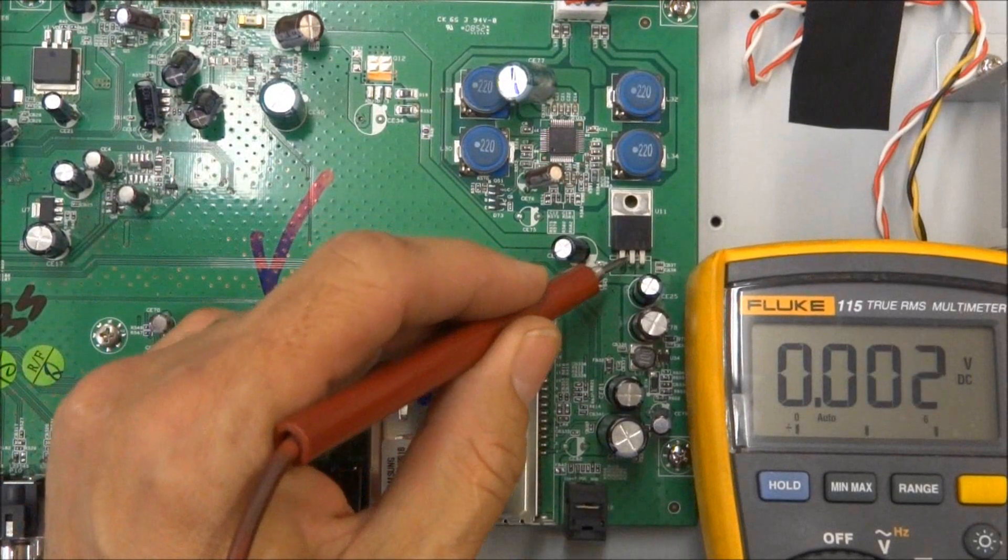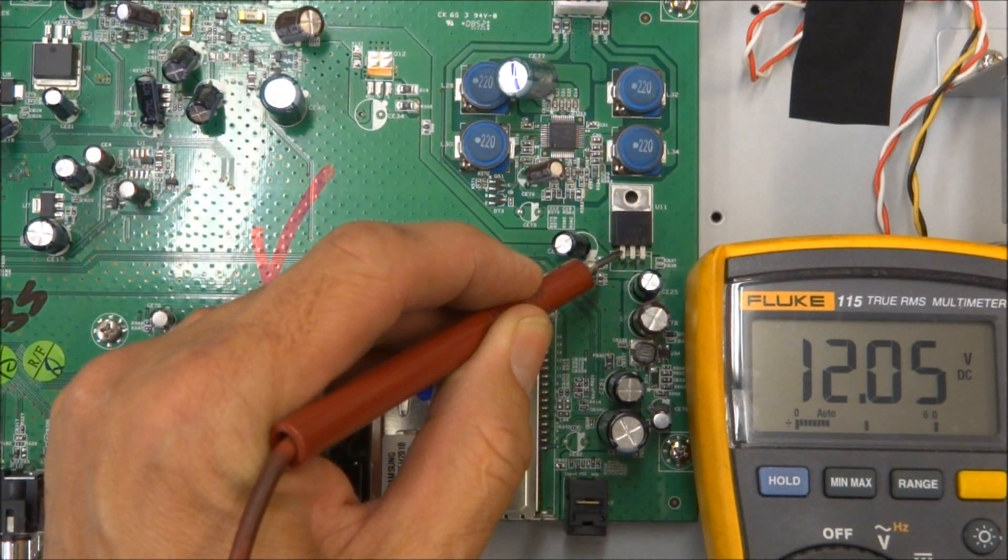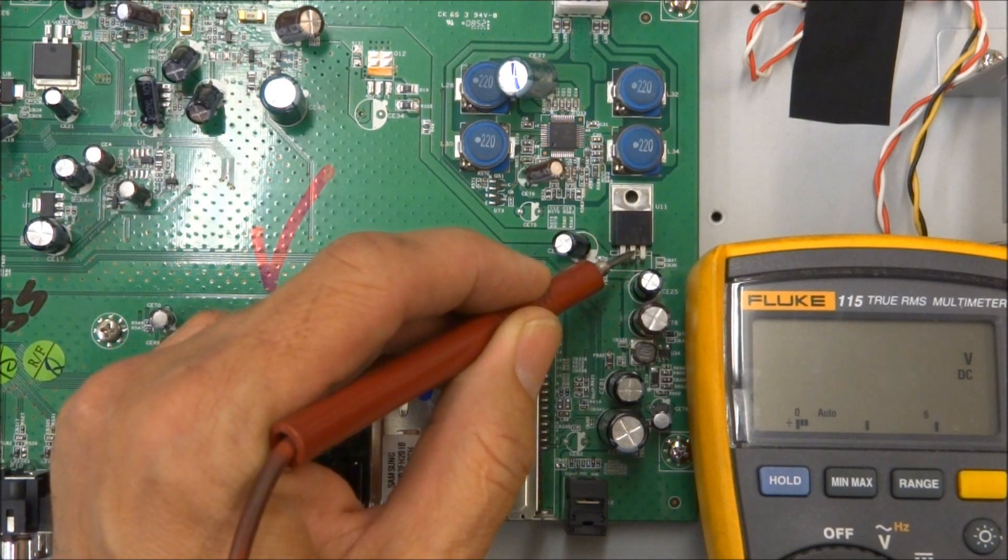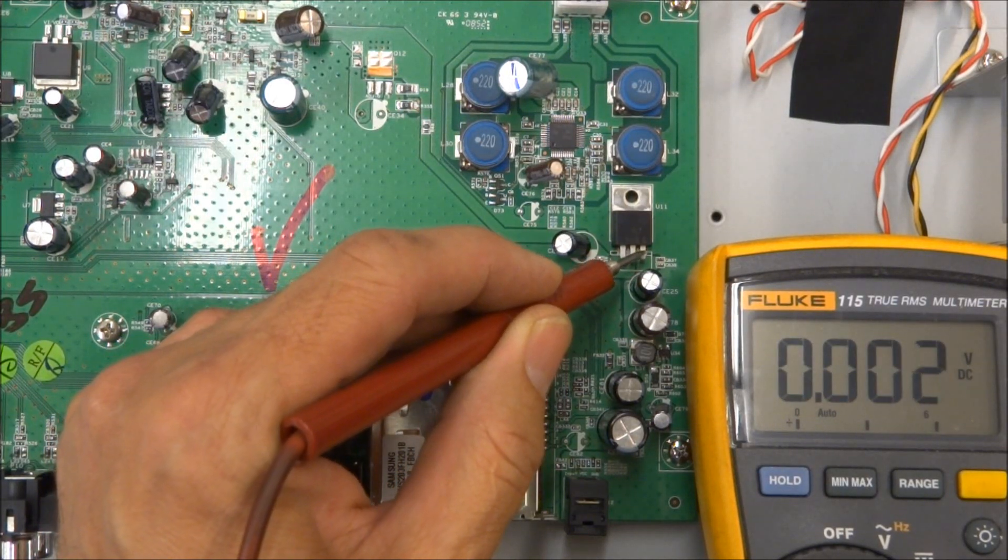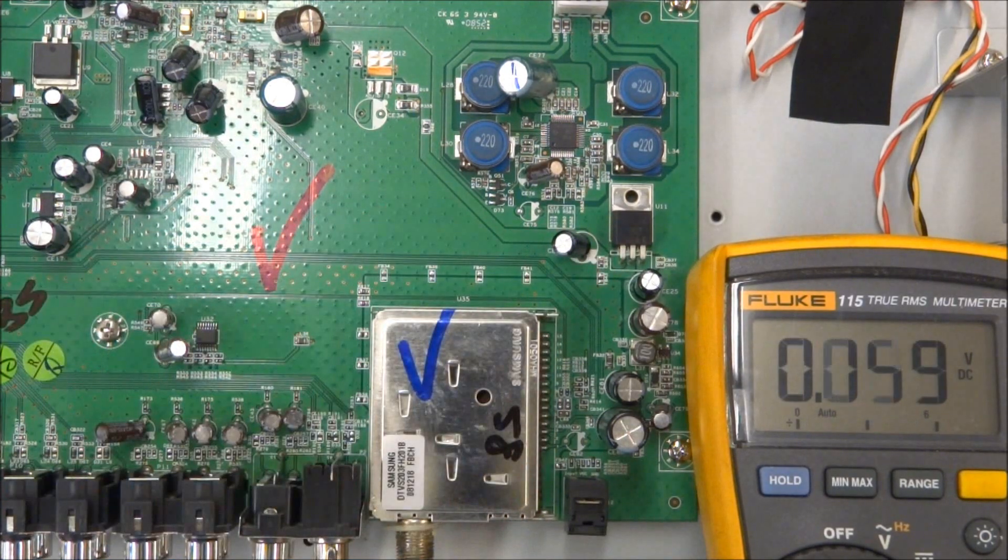The only other regulator we can look at is right here. This is an old school analog regulator. 12 volts on the input, ground on the center pin, and 5 volts on the output. It's labeled U11.